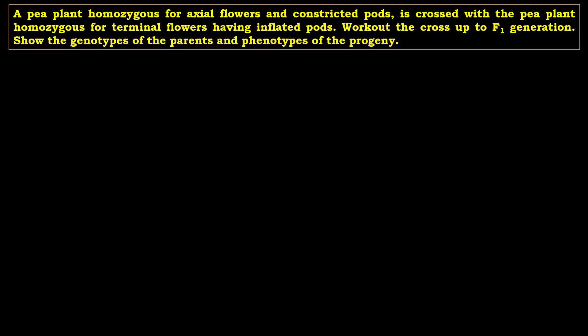Hello students, the question here is: a pea plant homozygous for axial flowers and constricted pods is crossed with a pea plant homozygous for terminal flowers having inflated pods. Work out the cross up to the F1 generation and also show the genotypes of the parents and the phenotype of the progeny.